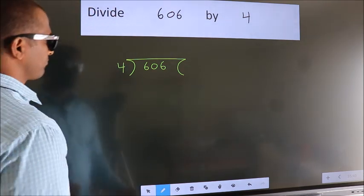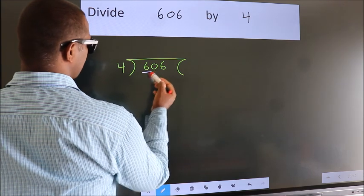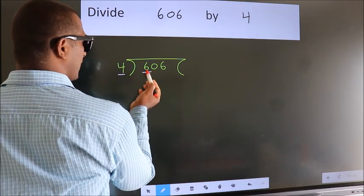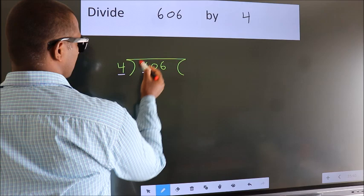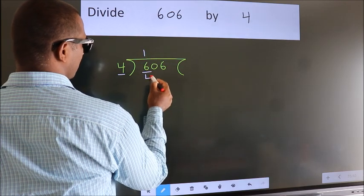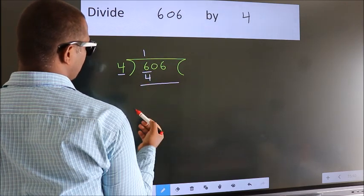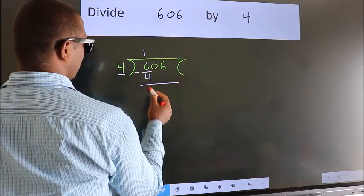Next. Here we have 6, here 4. A number close to 6 in the 4 table is 4 once 4. Now we should subtract. We get 2.